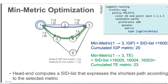Here we know the default IGP metric and TE metric is 10. So in this example, we are configuring a policy. In the policy, we are configuring a candidate path, assigning a preference, and saying dynamic in the metric. We can have a different type of metric, and based on that we can optimize our path. We can pick an IGP path, a TE path, or the link with the lowest delay. For example, the TE metric for the link between 1 and 2 is 15 and IGP is 10.